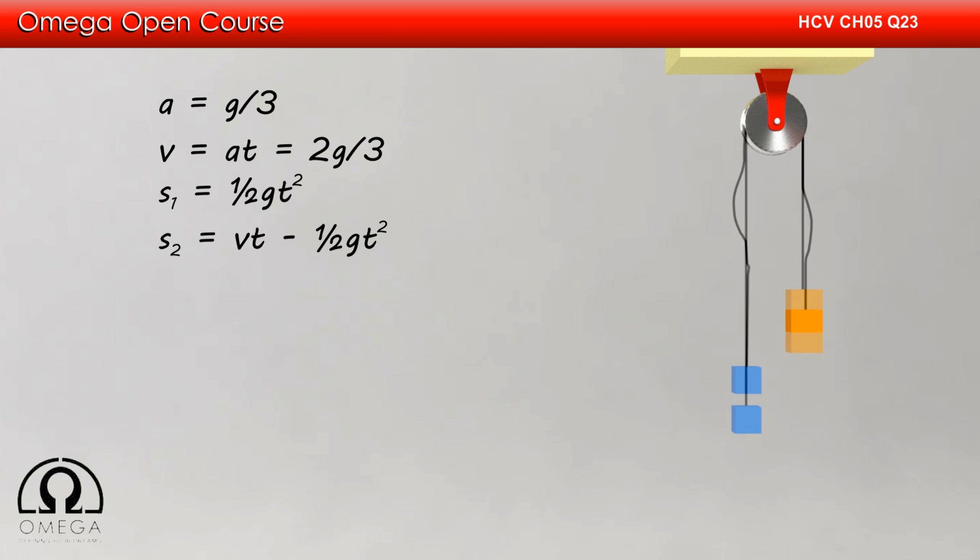Now, the string will be tight again when the downward displacement of the heavier block equals the upward displacement of the lighter block. That is, ½gt² = vt - ½gt².